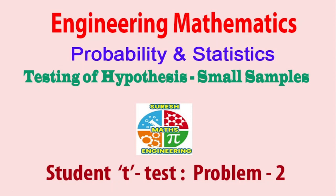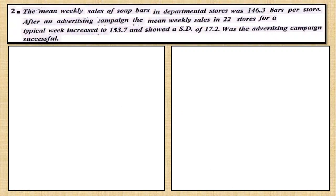Welcome to my channel. Today we are covering the topic of probability and statistics, specifically testing of hypothesis for small samples. Problem number two: the mean weekly sales of soap bars in departmental stores was 146.3 bars per store. After an advertising campaign, the mean weekly sales in 22 stores for a typical week increased to 153.7 and showed a standard deviation of 17.2. Was the advertising campaign successful?